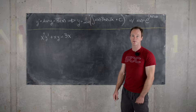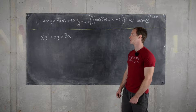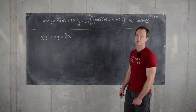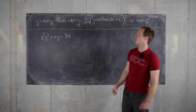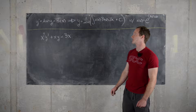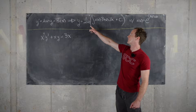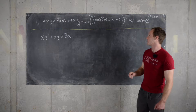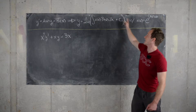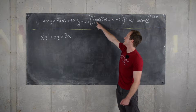Let's recall for a minute the general solution to such a differential equation. So if we have y prime plus a of x times y equals b of x, then we get y equals 1 over alpha of x times the quantity: